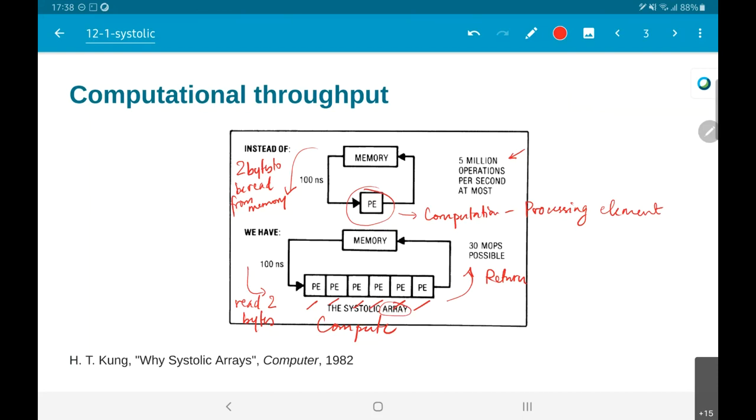Which means that now for every two bytes of data that are read from memory, you are effectively doing six computations. Potentially if all six of these things are being kept busy at the same time. In other words, on every clock cycle I read one byte of data, I do some computation in the first PE, then pass it on to the second PE, but at the same time the first PE gets the new set of data.